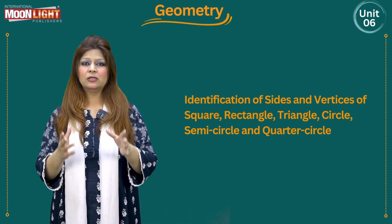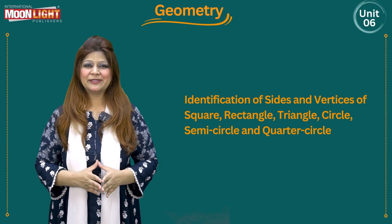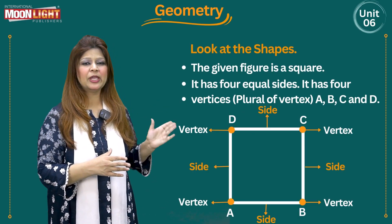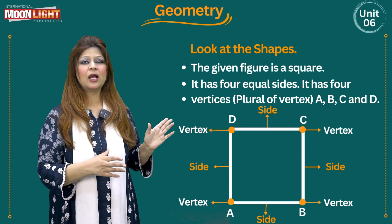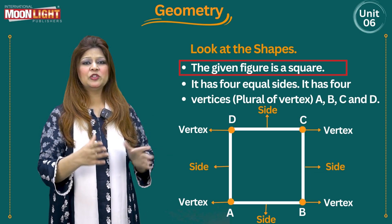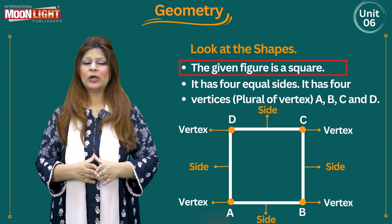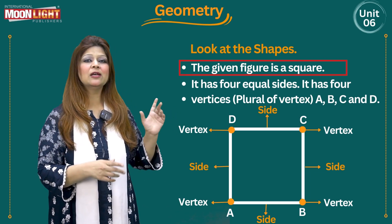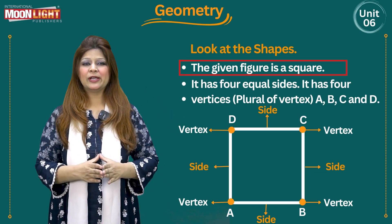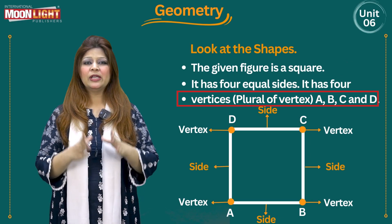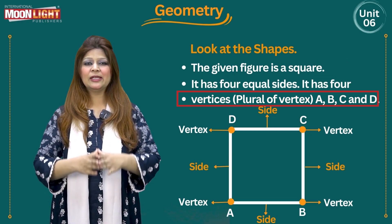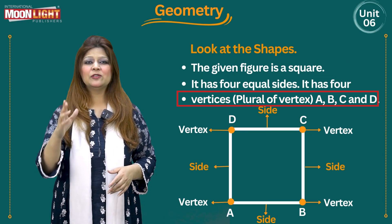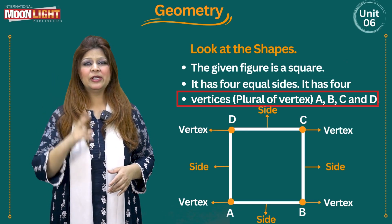So here we have to look at these shapes. This specific one is a square shape. So it has how many sides? Four equal sides. It has four vertices.